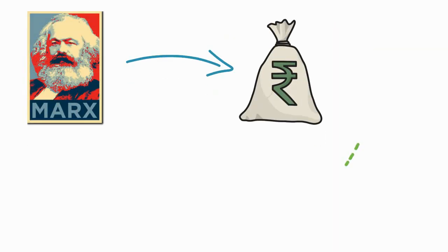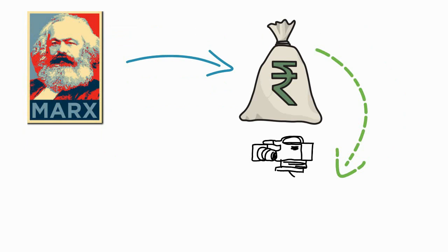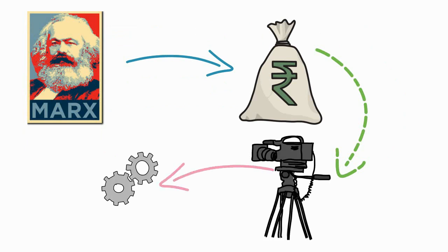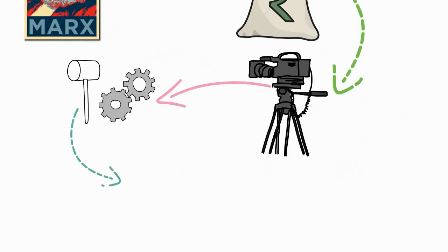Karl Marx, though an economic determinist, believes that the mode of production brings change in the relations of production. The mode of production consists of the tools and technology which changes one economic order to another, which finally brings social change.